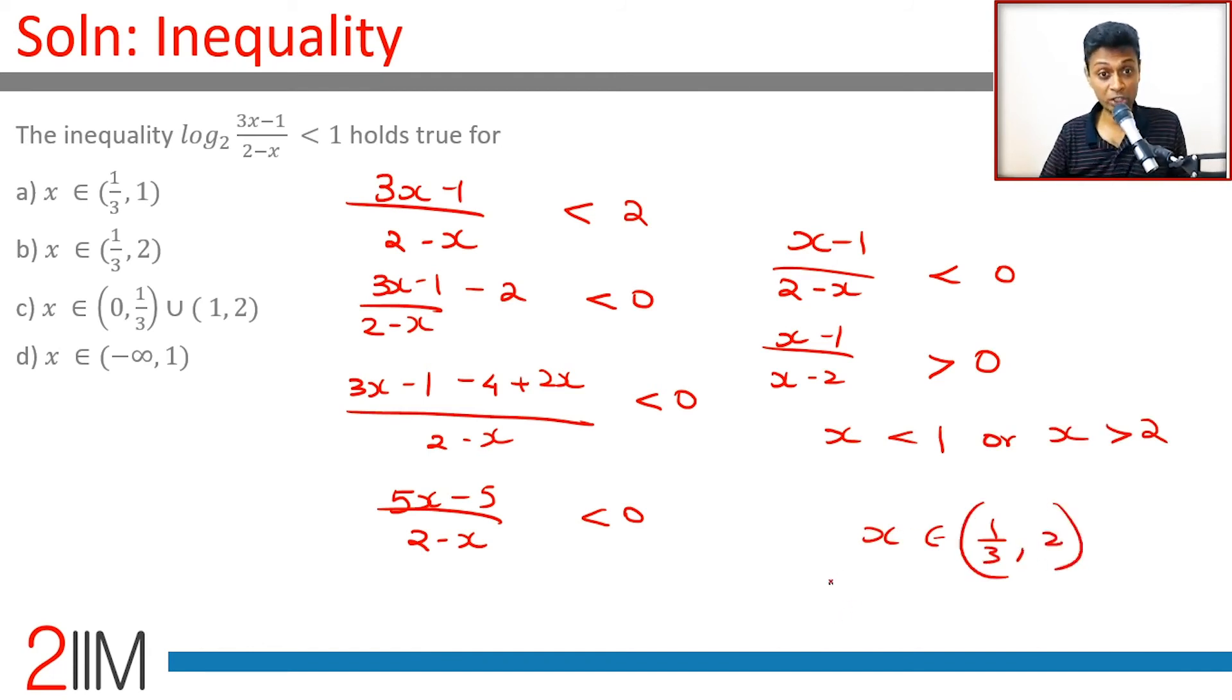Both of these conditions should be satisfied: the log should be defined and the inequality should hold good. That means x simply cannot be greater than 2; then the log won't be defined. So x should belong to the range 1/3 to 2 and should be less than 1, or x should be in the range 1/3 to 1. Absolutely delightful question. Any question with logarithm, you always have to worry about the log being defined in the first place. So don't let that go.